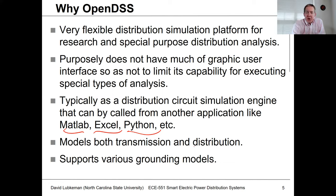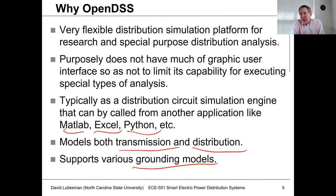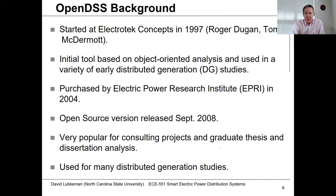OpenDSS is not just for distribution — it can also model transmission, though the data structure is more distribution-oriented. It supports a variety of different grounding models, so we're not limited to assuming an ideal ground. You can actually model four- or five-wire systems, six-wire systems, or any combination of wires you want with this tool.